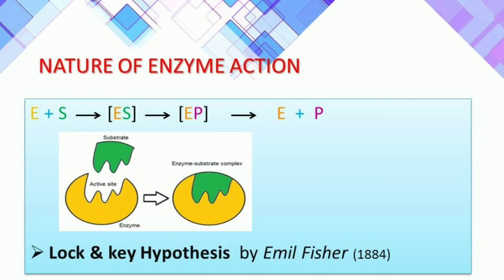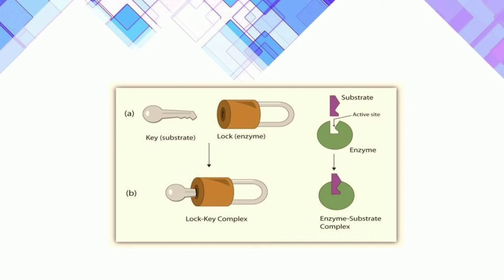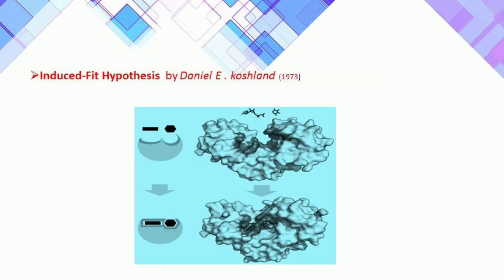This enzyme-substrate complex formation has been explained by the lock and key hypothesis proposed by Emil Fischer in 1884, where the lock is the enzyme and the key is the substrate. Only the correctly sized key — the substrate — fits into the keyhole, which is the active site of the lock — the enzyme.